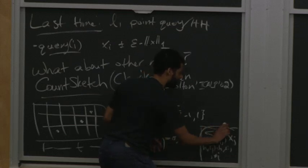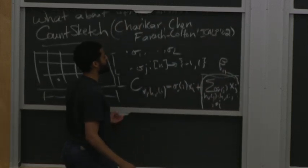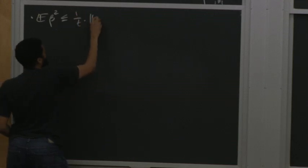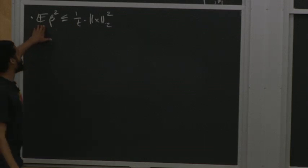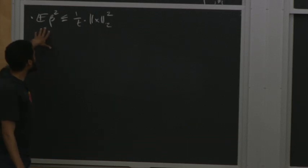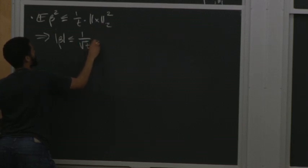Calling the error term beta, by computations familiar from the problem set, the expectation of beta-squared is at most (1/t) times the L2 norm squared of x. By Markov, with constant probability beta is at most (1/sqrt(t)) times the L2 norm.